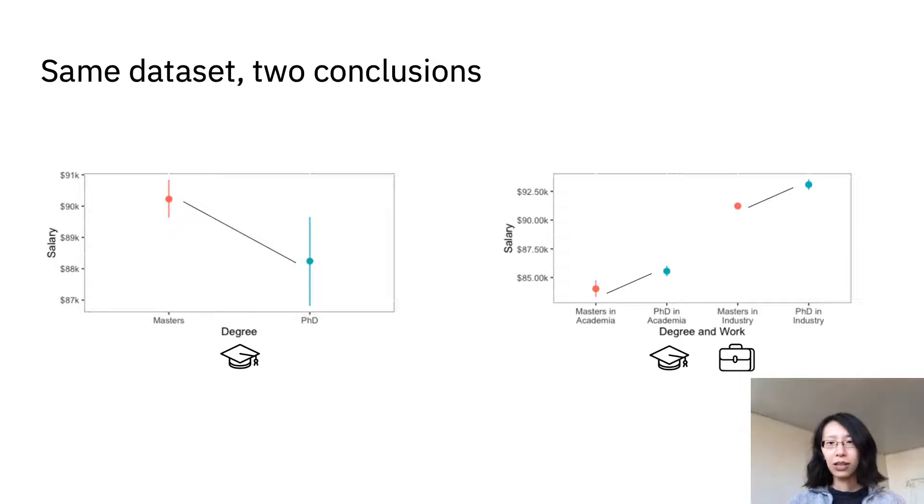You may recognize this as Simpson's paradox, where trending data reverses when the data are grouped differently. Here, there are just a lot more masters in industry, and industry pays more so that drives up the average for masters.